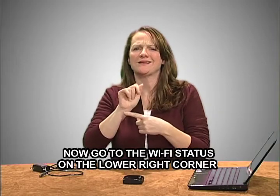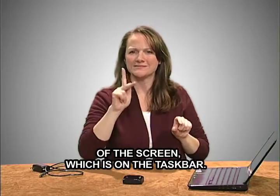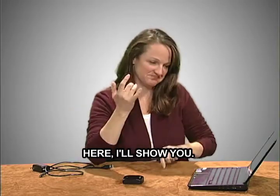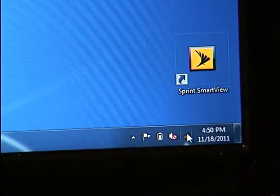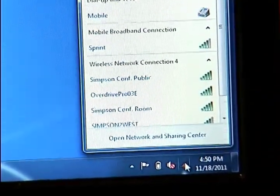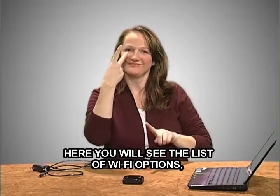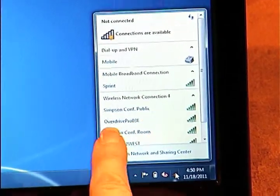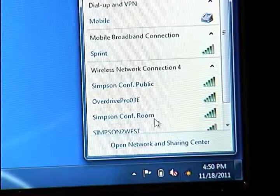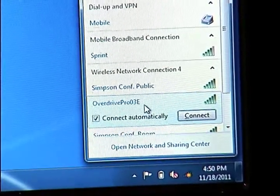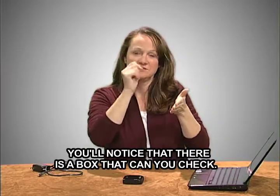Now go to the Wi-Fi status on the lower right corner of the screen, which is on the task bar. Here I'll show you. Here you'll see the list of Wi-Fi options and you want to search for the OverPro. Once you find it, go ahead and click on it.